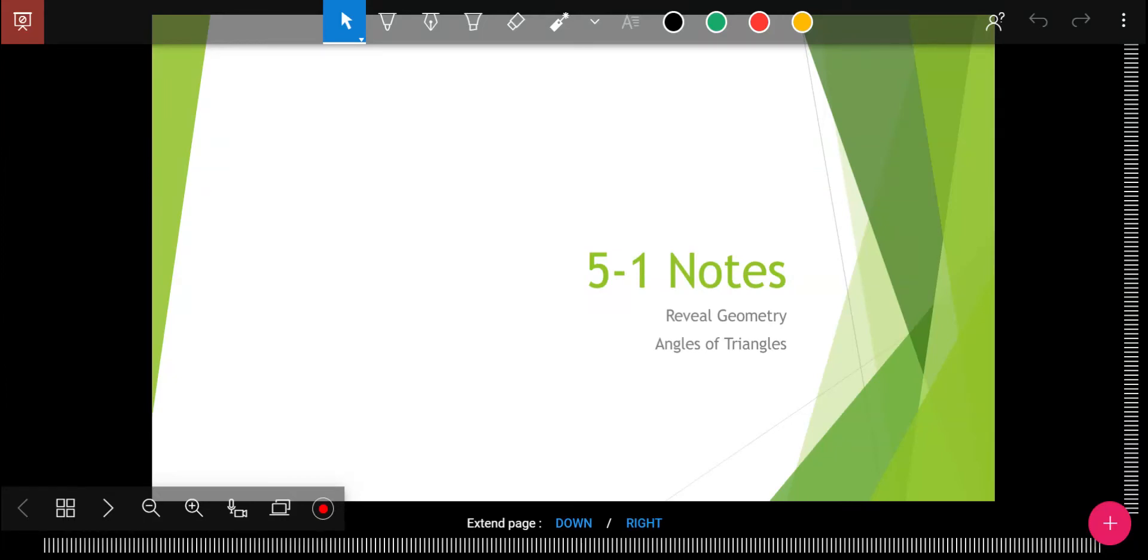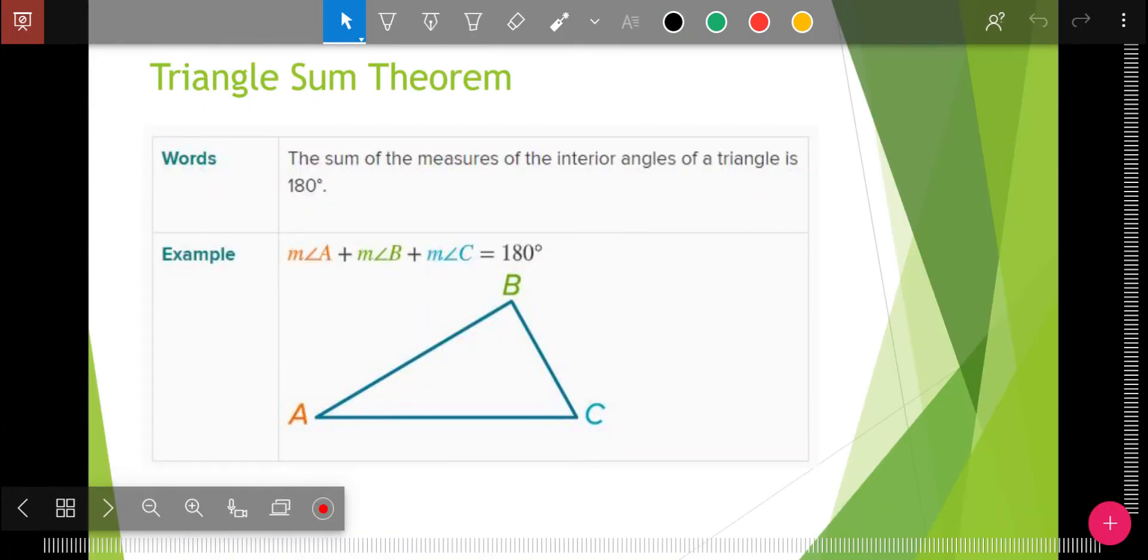Today's lesson is going to be talking about triangles and the angles that we are going to find inside of the triangles. A triangle has three angles on the inside. In this case, it would be angle A, angle B, and angle C. And the sum, when you add all three angles up inside of a triangle, no matter what triangle it is, they add up to 180 degrees. And so that is called triangle sum theorem. Triangle sum theorem means that they add up to 180.